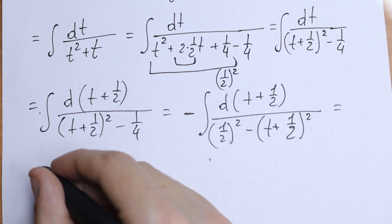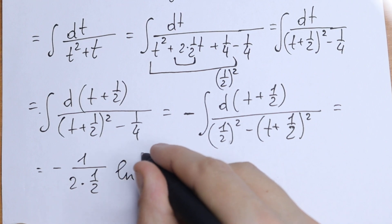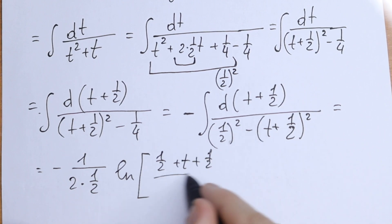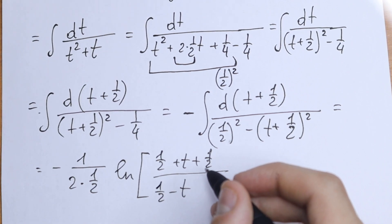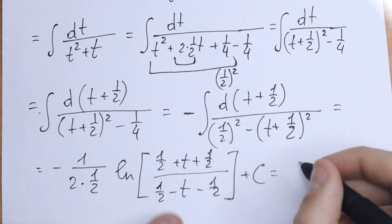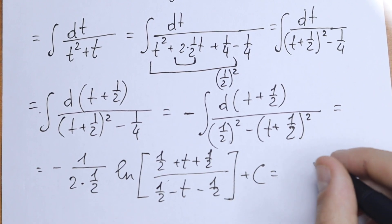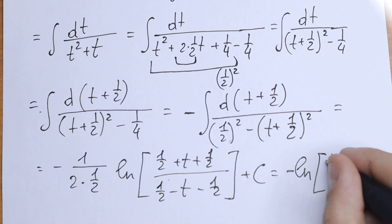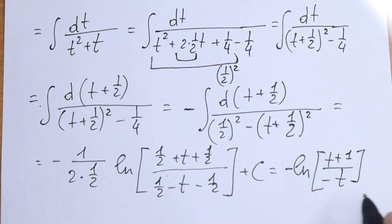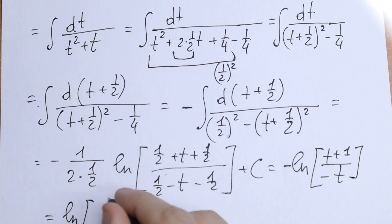This is our classic natural log formula. So the result equals minus 1 divided by 2 times one-half, times the natural log of one-half plus t plus one-half, divided by one-half minus t minus one-half, plus C. Simplifying all of these elements, the numerator becomes t plus 1 and the denominator becomes minus t. So we get minus natural log of t plus 1 over minus t, which simplifies to natural log of t over t plus 1, plus C.